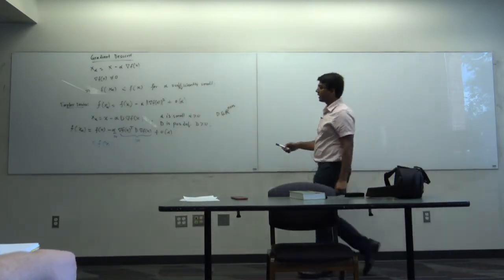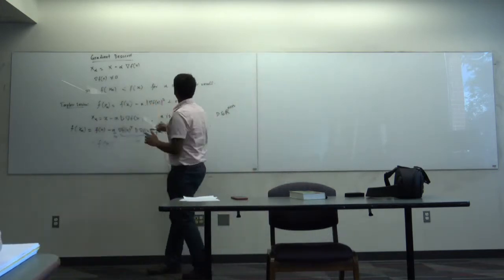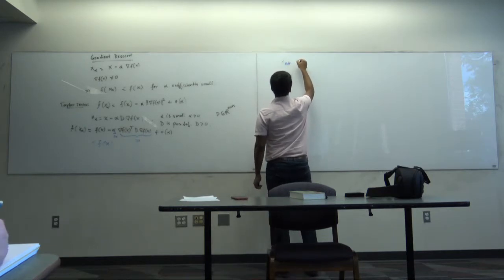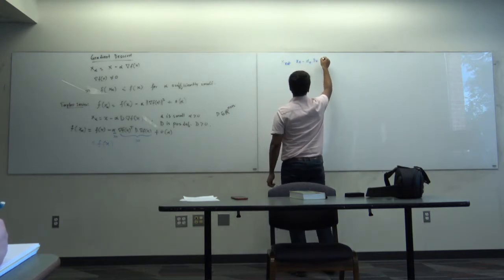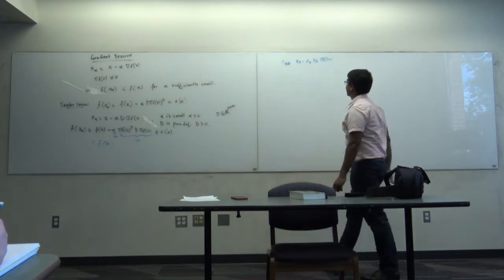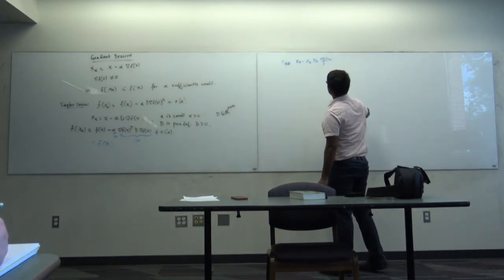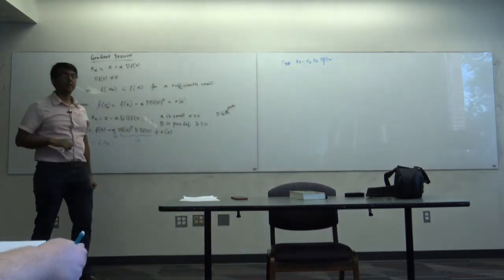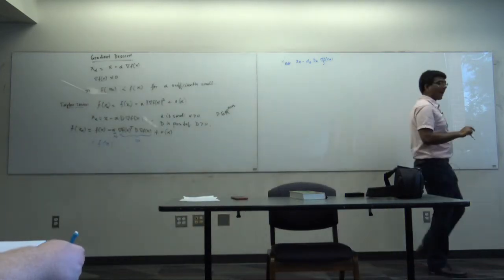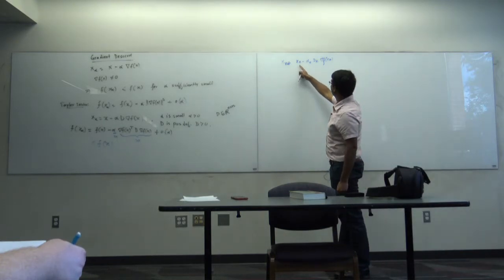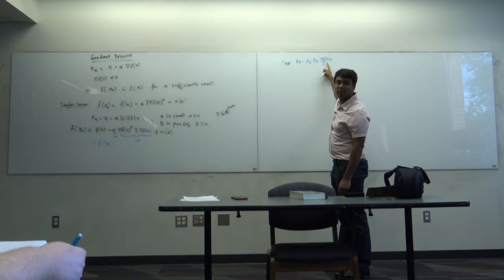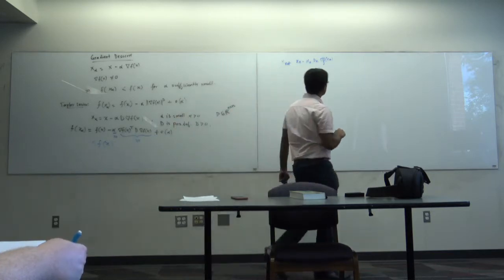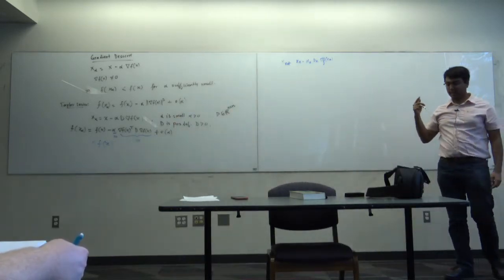Now consider the iteration: x_{k+1} equals x_k minus alpha_k times D_k times the gradient of f(x_k). When will this algorithm converge? When x_{k+1} equals x_k — since alpha and D are positive — it means the gradient of f(x_k) equals zero.